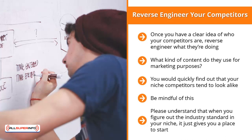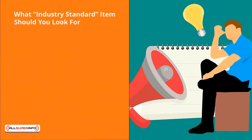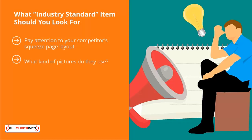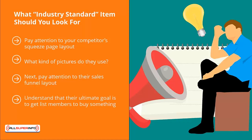Knowing the industry standard gives you a head start instead of fumbling around to come up with your own squeeze page or mailing list strategy. Pay attention to your competitor's squeeze page layout — the sign-up page they use to get their target audience to join their mailing list. Notice how they lay out these pages: what pictures they use, what text they present, whether they tell stories or show videos. Also pay attention to their sales funnel layout — how they get people to sign up and then sell those list members a wide range of products and services.